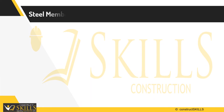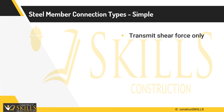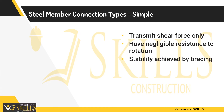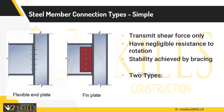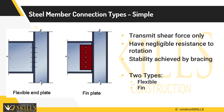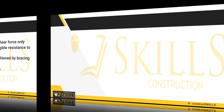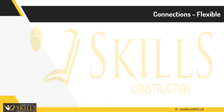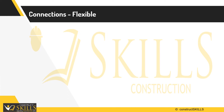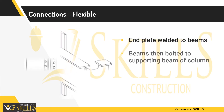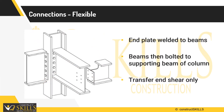Types of connections of steel members. One: simple connection — this transmits only shear force. They have negligible resistance to rotation and stability is achieved by bracing. They are of two types: flexible and fin. In a simple connection, first is flexible connection: the end plates are welded to beams, and beams are then bolted to supporting beams or column. This connection only transfers in shear.